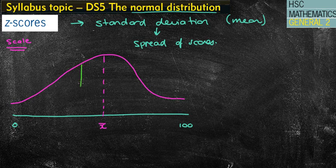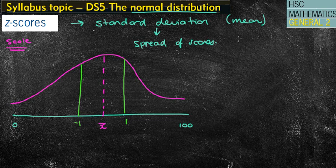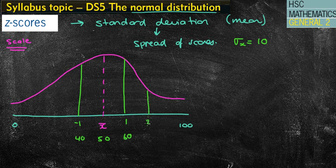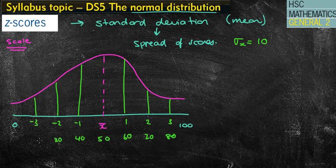Within that distribution curve, the marks will obviously change. We start looking at standard deviation and how scores are spread out. Let's say the standard deviation, noted by that symbol, is going to be 10 marks. So the mean is 50, one standard deviation above would be 60, one below would be 40. Two standard deviations above would be 70, three would be 80. Minus two would be 30, minus three would be 20, and so on until we get to 0 or 100.